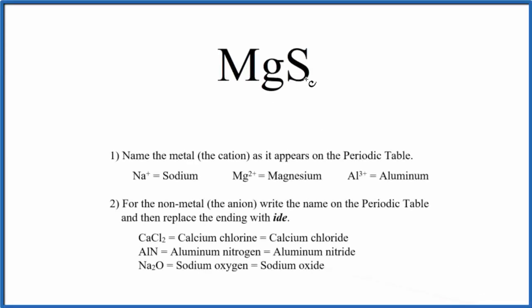To write the name for MgS, we first need to recognize that we have an ionic compound here. That's because we have a metal and a non-metal. Metal and a non-metal gives us an ionic compound.